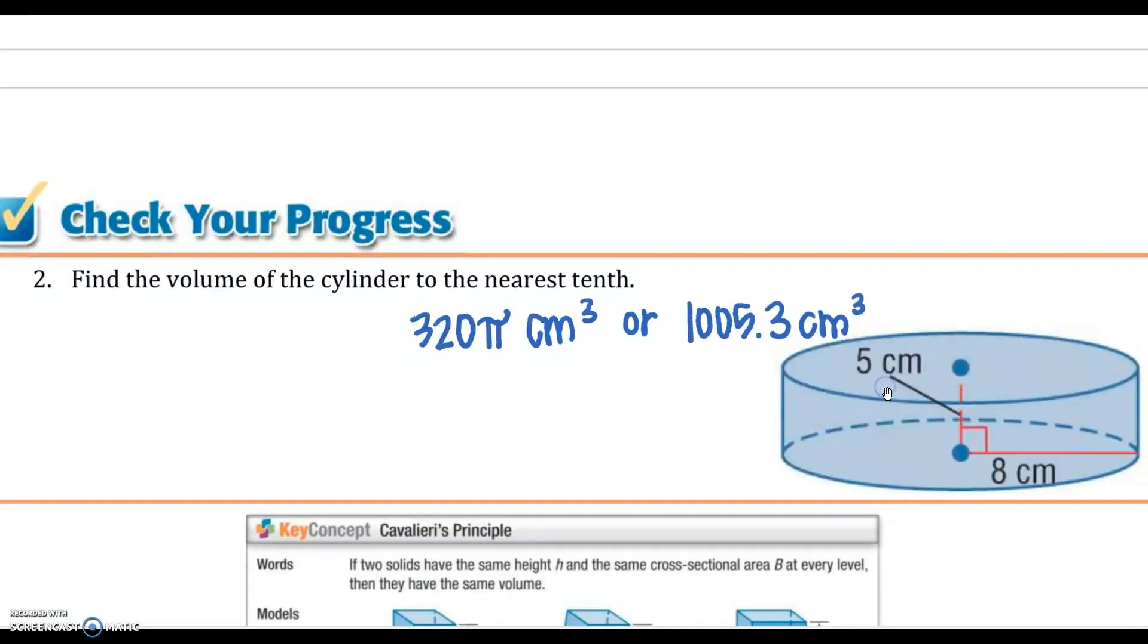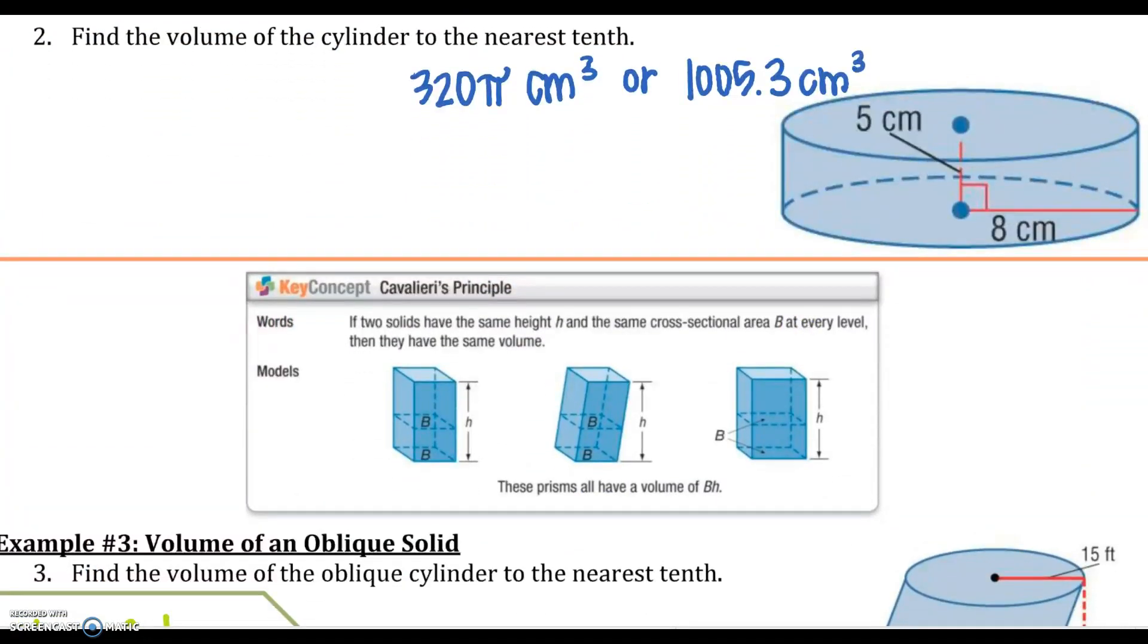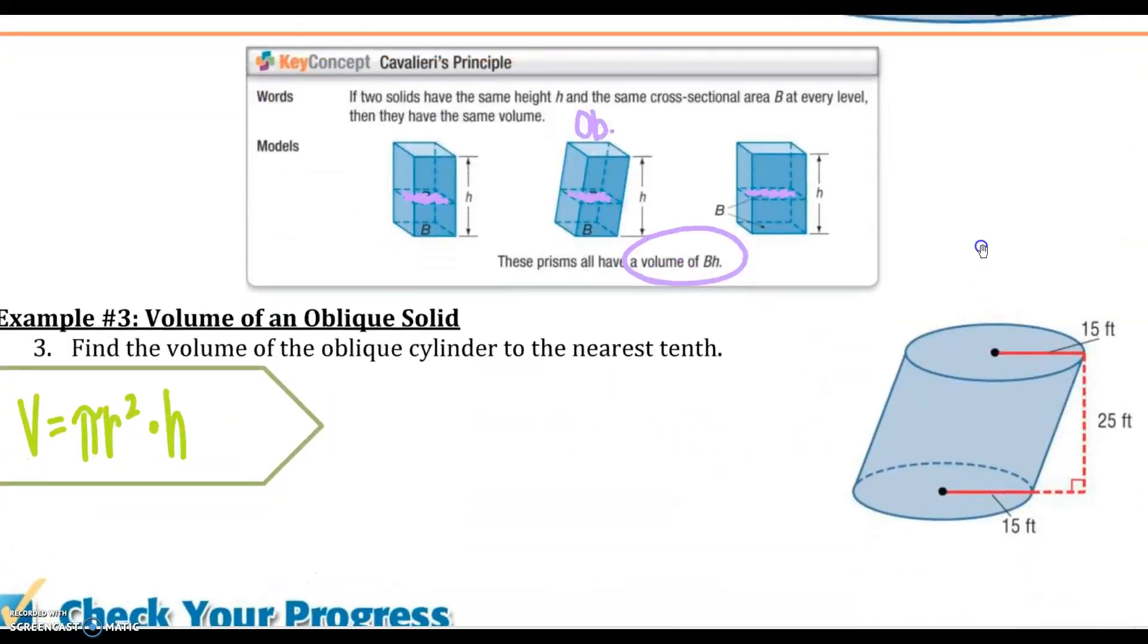Here are your answers for that. Make sure you have all of your information down, all of your work down. Cavalieri's principle just says that if two solids have the same height and the same cross-section, remember cross-section is when you cut that solid with a plane, all of these cross-sections are going to be the same area of the base at every level. Then they have the same volume. You may just look at that and say an oblique prism or an oblique cone or cylinder or whatever will have the same. You can use the same volume formula to find it whether it is oblique or it is right. Remember, oblique just means it is kind of slanted to the side.